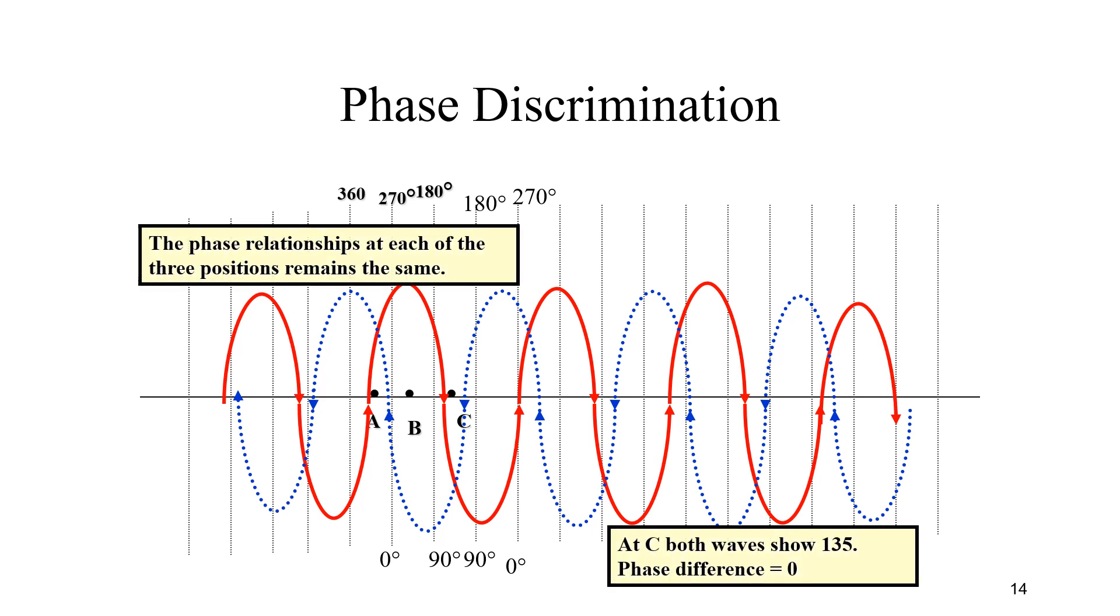You can see here the phase relationships at each of the three positions remain the same, and the phase difference is zero when they are transmitting simultaneously.